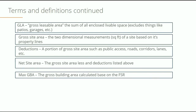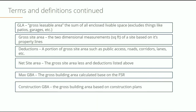Next is the max GBA — this is the gross building area and the maximum amount that could possibly be built based on the floor space ratio assigned to the property. That doesn't mean that's how big the building is going to be; it just means that's how big it could be if developed to its maximum capacity. Once you know the max GBA, you've got the construction buildable area, which is the gross buildable area based on construction plans, and may not maximize the total amount.